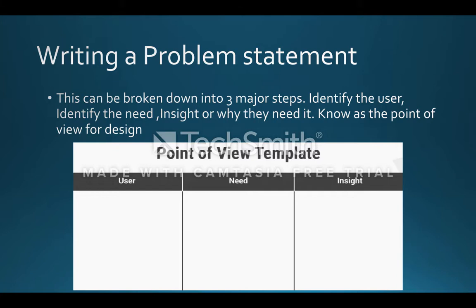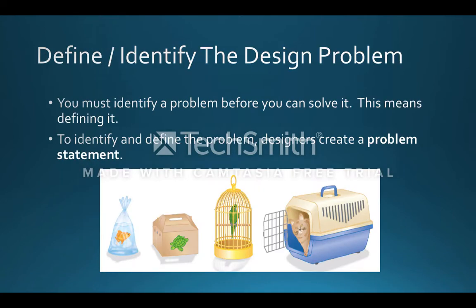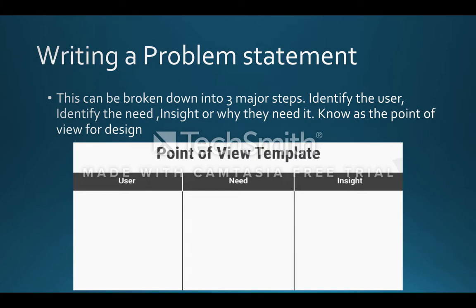When identifying your user, you want to know who is going to be the end user of the product you are designing. Looking at an image of different pets in different vessels — a fish in a bag, a turtle in a box, a bird in a cage, and a cat in a carrier — these are all from the same problem statement. The user would be the pet owner and the pet. The need is to have a way to safely transport your pet. The insight is why they need it. The problem statement was: the pet owner needs to transport their pet to the vet in a way that is not only safe for the pet — they won't get loose — but they can't get out and hurt anyone else either.